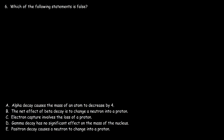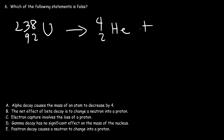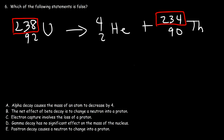Number six: which of the following statements is false? Let's start with A: alpha decay causes the mass of an atom to decrease by four. Using the uranium-238 example, when it produced an alpha particle, we got thorium-234. The mass went from 238 down to 234, a decrease of four. So A is a true statement — we're looking for a false statement, so let's analyze every statement carefully.